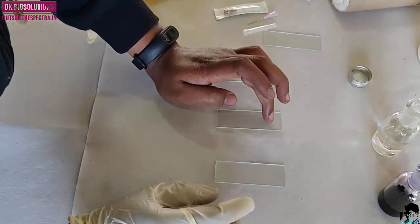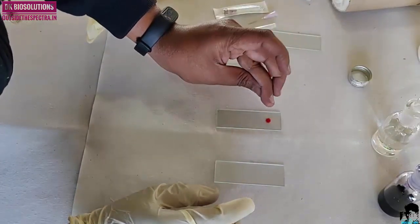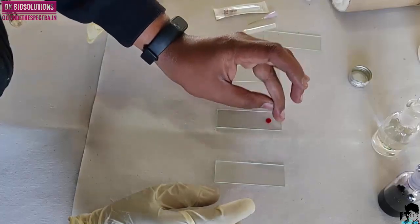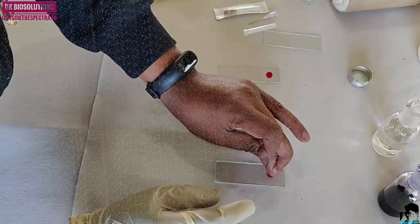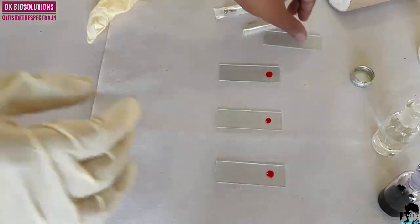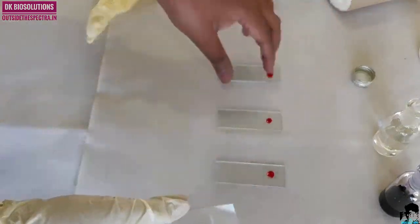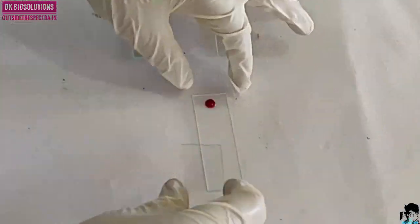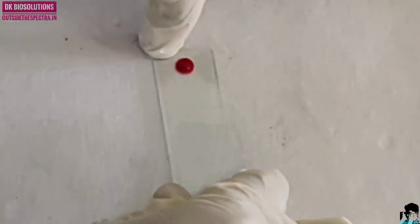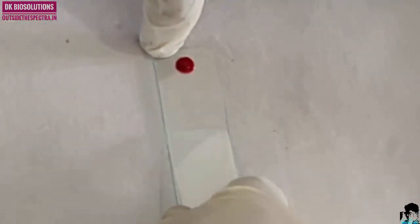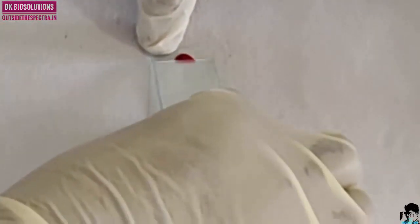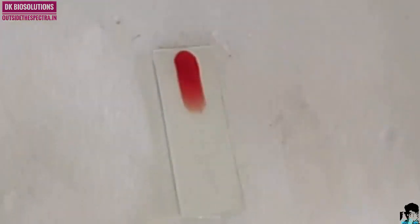We will start with our blood film preparation. Place a drop of blood at one end of the clean slide. After placing a drop of blood at one end of the slide, now use another slide as a spreader to spread that blood into a thin smear.